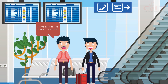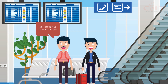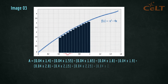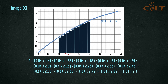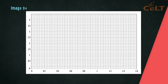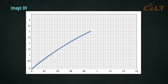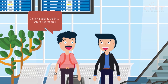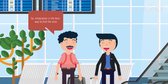The smaller the slices, the answer is getting better. We can make the width Δx even smaller until it approaches zero. So integration is the best way to find the area.